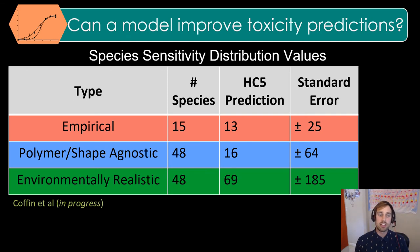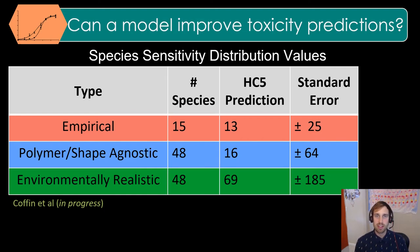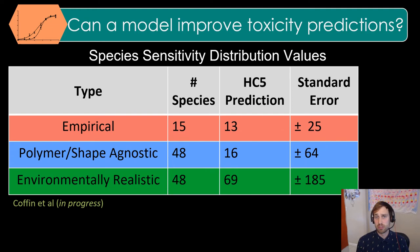In contrast to our hypothesis that realistic microplastics polymers and shapes would result in lower toxicity thresholds, the machine learning model predicted higher effect concentrations, at least through this species sensitivity distribution approach. However, the empirical and the predicted thresholds were not significantly different from one another.